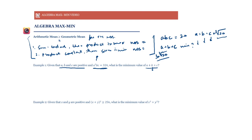The product a²bc is constant, meaning we have two a's. What if we split a into a/2 and a/2? That way, the sum stays a/2 + a/2 + b + c, which equals a+b+c, and the product of these four numbers becomes (a/2)·(a/2)·b·c = a²bc/4.